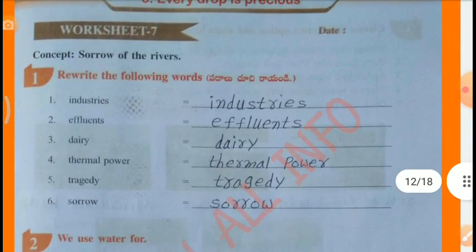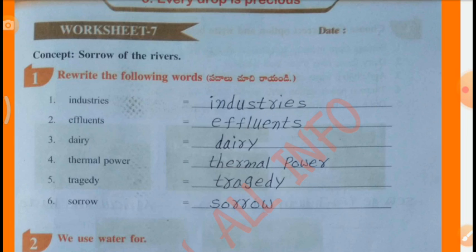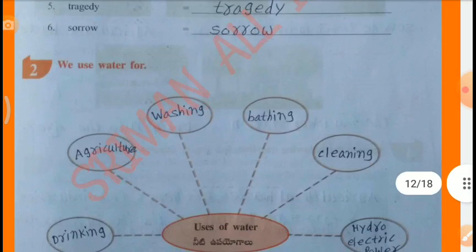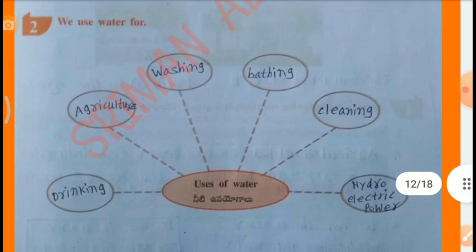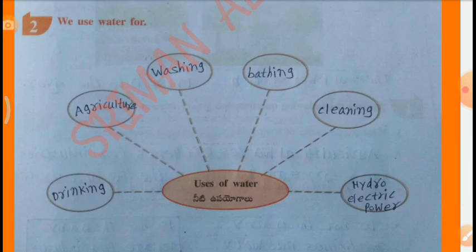Worksheet 7: Sorrow of the River. Relate the following words: Industries, Effluents, Dairy, Thermal Power, Tragedy, Sorrow. Mind map – we use water for: drinking, agriculture, washing, bathing, cleaning, hydroelectric power.